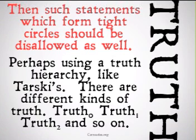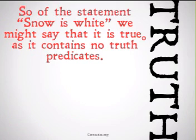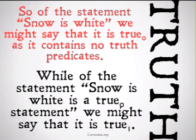If you want more information, check out the Stanford Encyclopedia of Philosophy. Whenever we speak of the truth of some statement S, we must use a subscript one higher than any found in S, or the statement is just going to be meaningless. So of the statement 'snow is white,' we might say that it is true-zero, as it contains no truth predicates. While of the statement 'snow is white is true-zero,' we might say that that statement is true-one. We couldn't say that it's true-zero, because it contains the true-zero predicate.